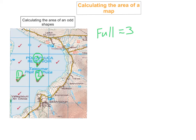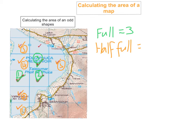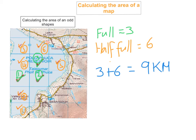Now we add up all the boxes that are half full. That's one, two, three, four, five, six — so six half boxes. So you've got three full boxes of the reservoir and six half boxes. All you have to do is add them together: three plus six equals nine kilometres squared. Make sure you don't forget the squared — it's really important and it's a common mistake on the exam. You just add up all the full boxes and all the half full boxes. Some of you might be thinking you just add up all the boxes that are more than half full — and that is correct. So counting all boxes more than half full gives you nine kilometres squared.